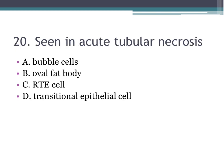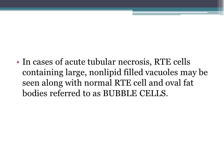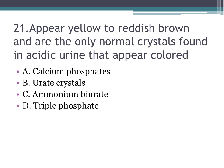Number twenty: seen in acute tubular necrosis — A. bubble cells, B. oval fat bodies, C. RTE cells, D. transitional epithelial cells. The correct answer is A, bubble cells. In acute tubular necrosis, RTE cells containing large non-lipid-filled vacuoles may be seen along with normal RTE cells and oval fat bodies — these are referred to as bubble cells.